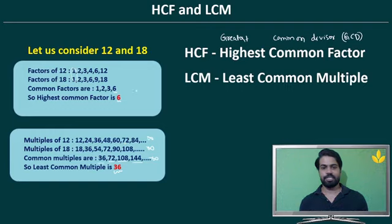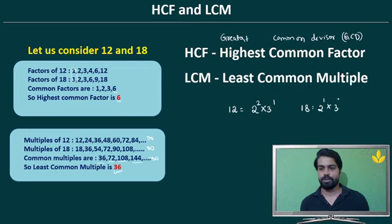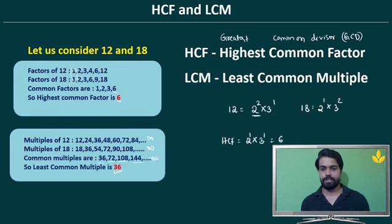This is a tedious process, so instead I will use prime factorization. I write 12 as 2² × 3¹ and 18 as 2¹ × 3². For HCF, we take only the common factors with the lowest power: 2¹ and 3¹, giving HCF = 6. For LCM, we take the highest powers: 2² × 3² = 36.